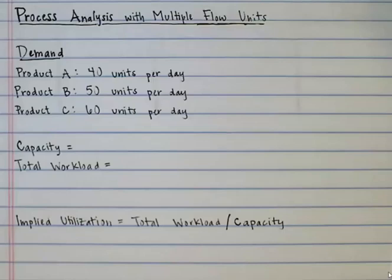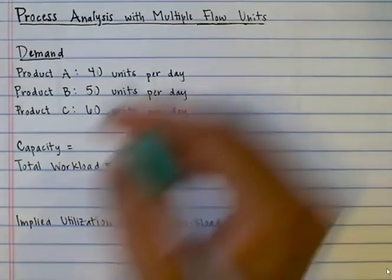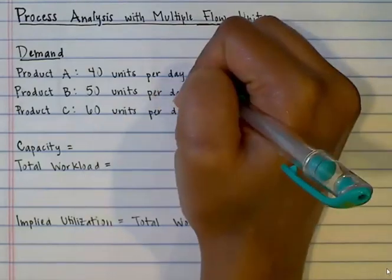This is the process analysis with multiple flow units question for the process analysis module practice problems. There are three products produced by five resources, and each resource works eight hours per day.